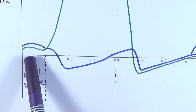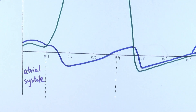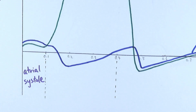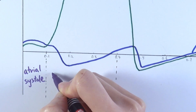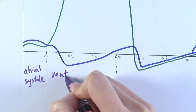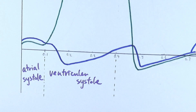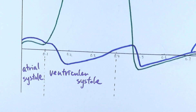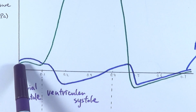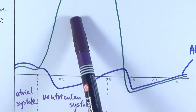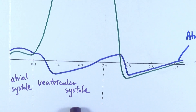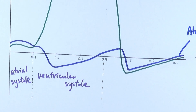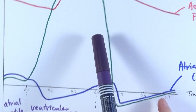Next, you can see the ventricular pressure shooting upwards — the ventricles are contracting, which is why the pressure increases. This stage is called ventricular systole, also known as atrial diastole, because the atria are relaxing, hence the drop in atrial pressure. Ventricular systole causes the pressure to go very high, meaning blood is actively leaving the ventricles and exiting the heart.